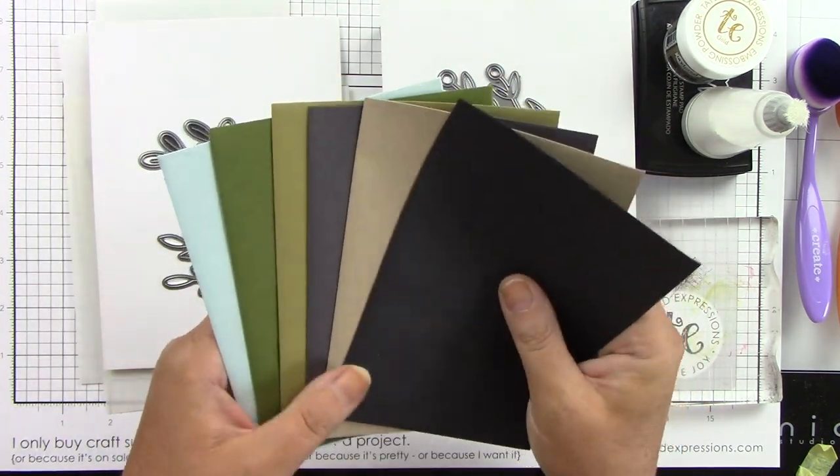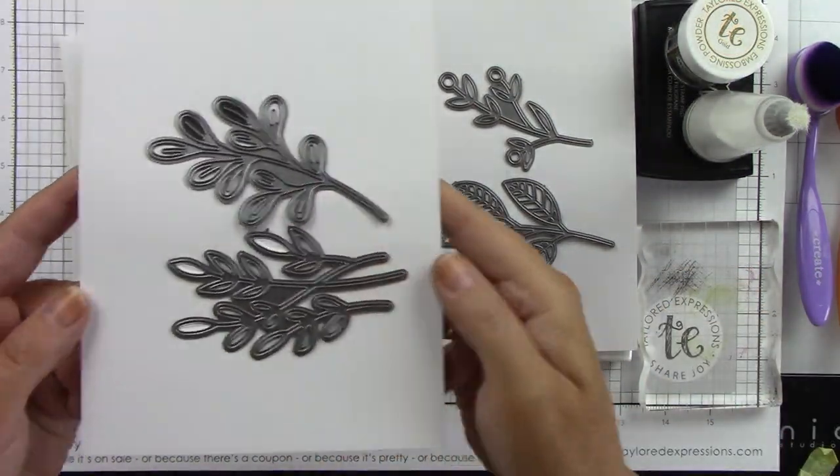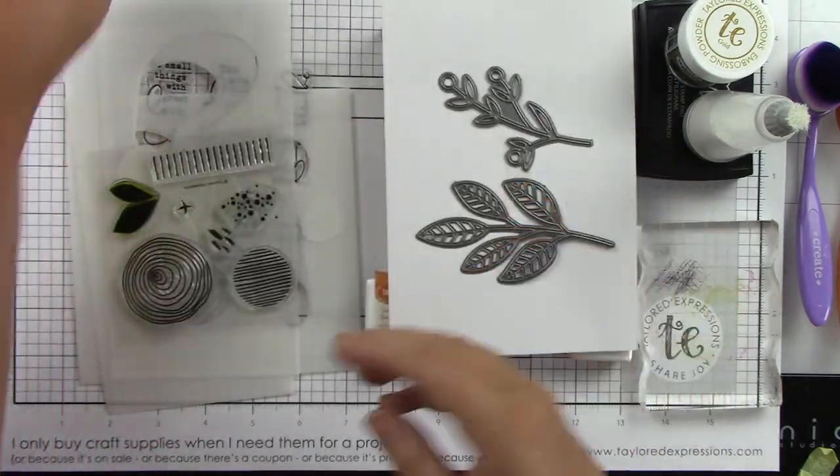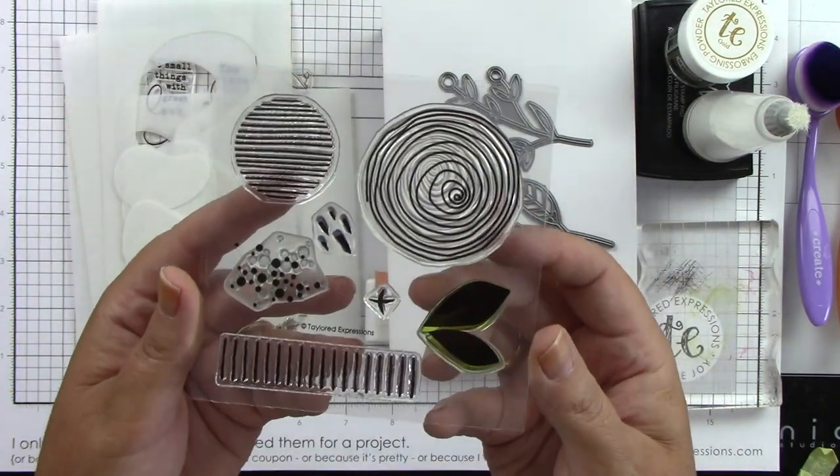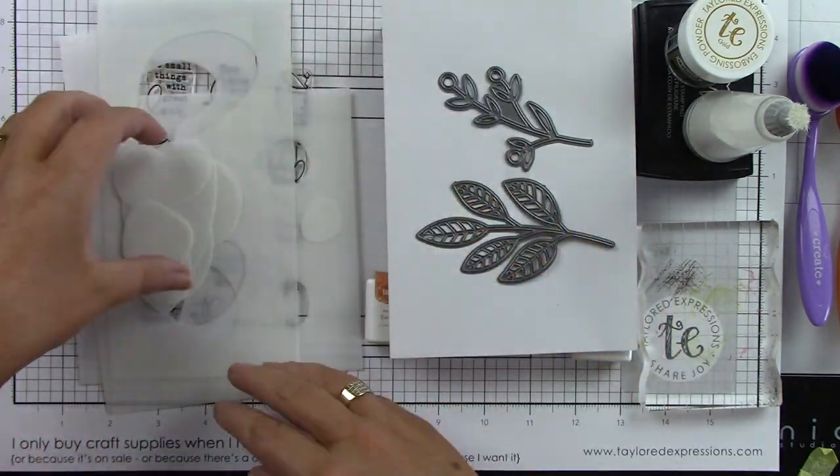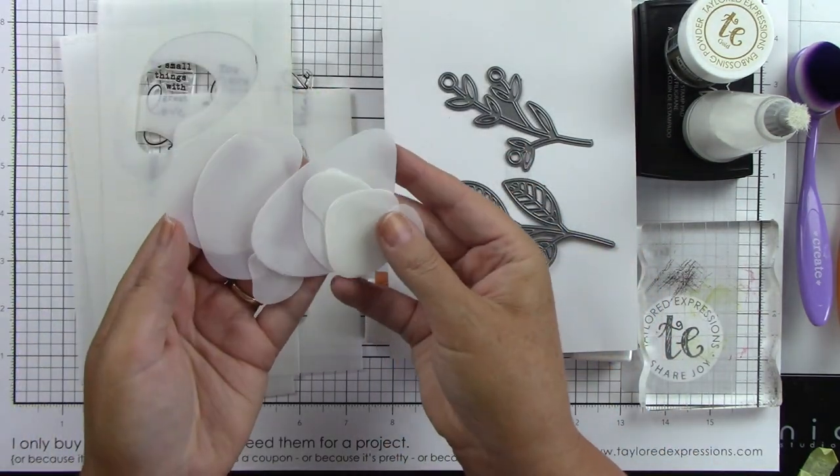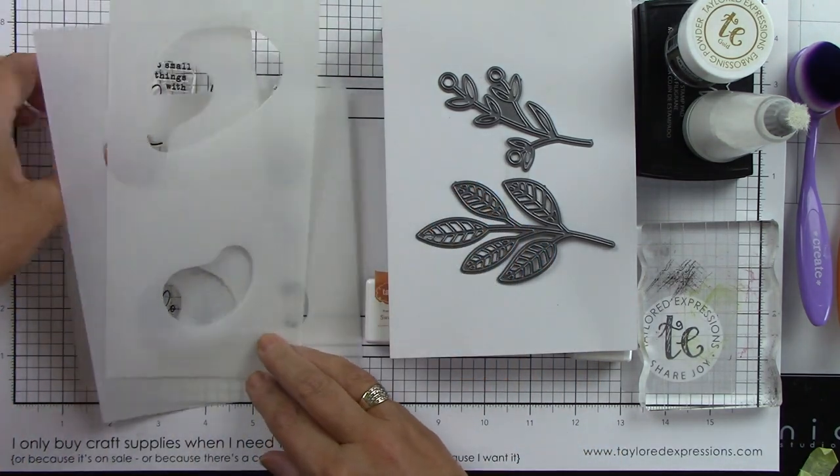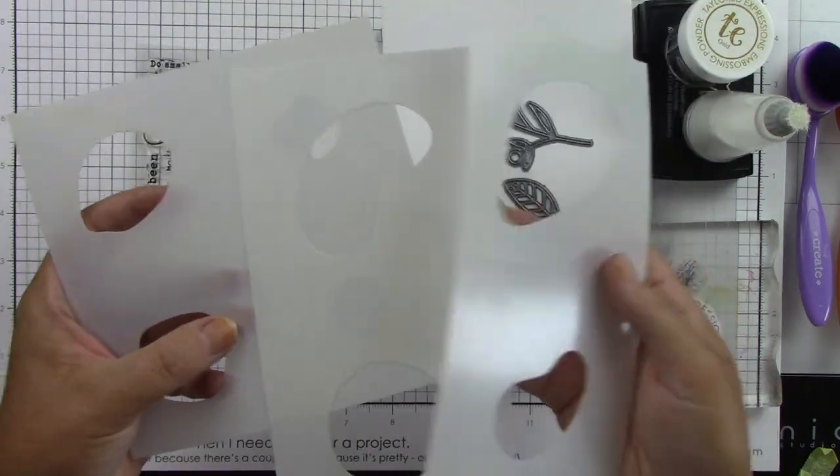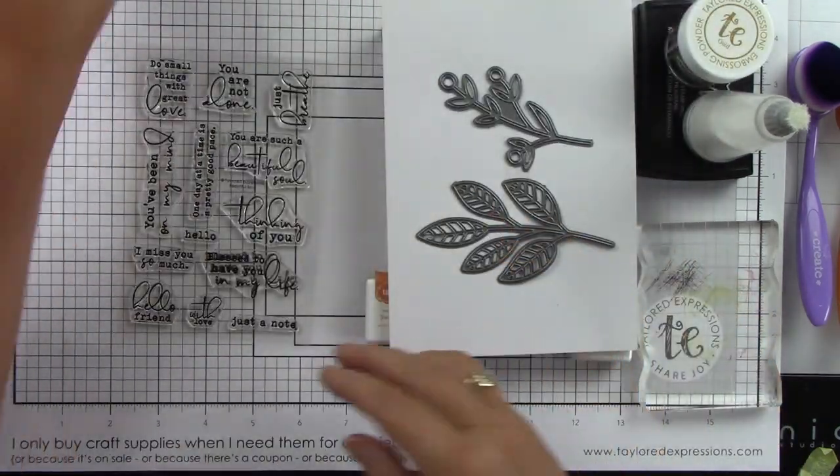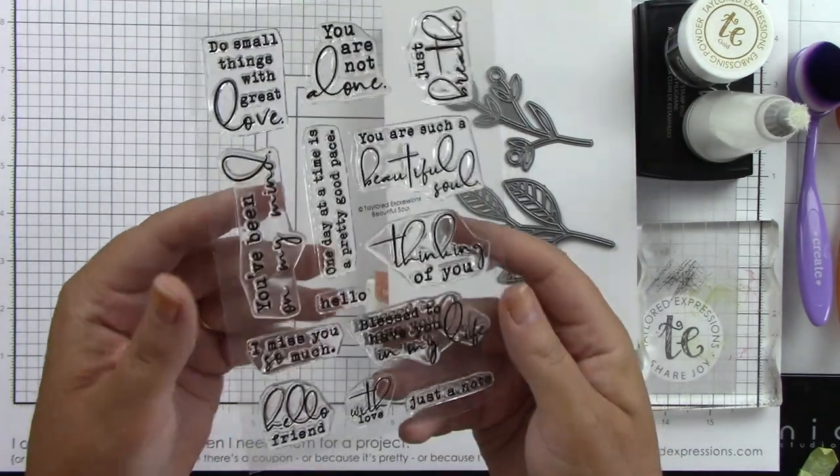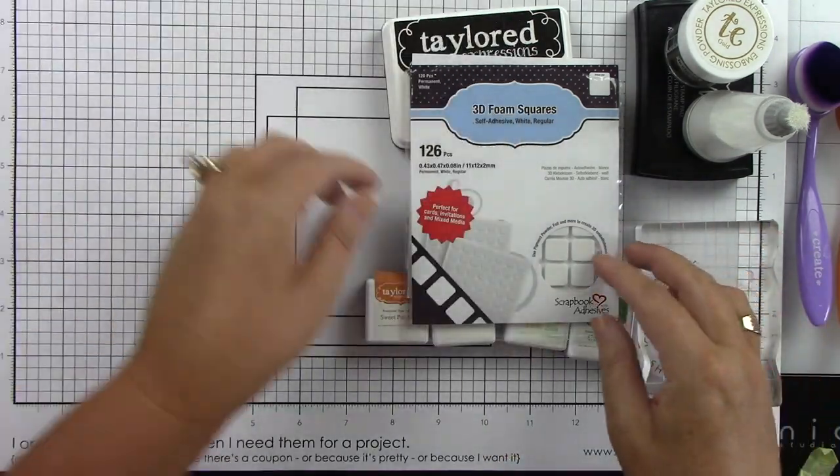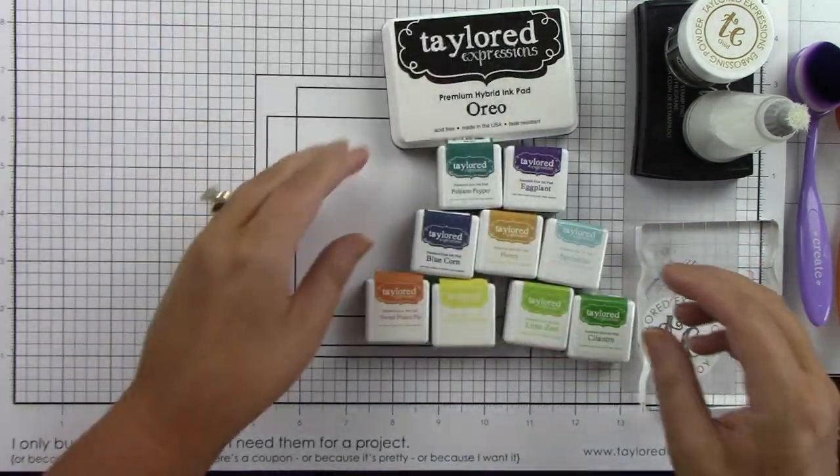In the kit, you get the Subtle Sprigs die with two great sprigs. Then you have the Abstract Accents, which is the clear stamp and stencil combo. With the stencils, you have the little masking part which I will show you how I use. You get three stencils with fun abstract images and the Beautiful Soul stamp with great sentiments. This is an add-on, the Branch Out die. That does not come in the kit.